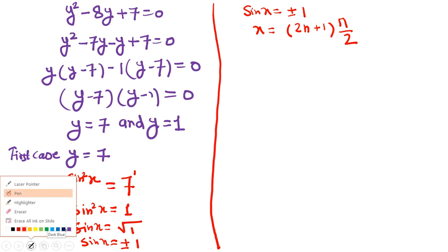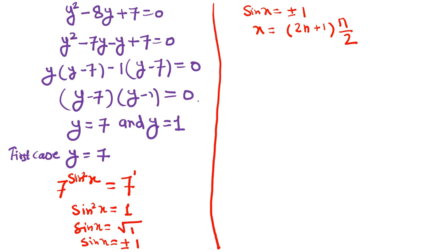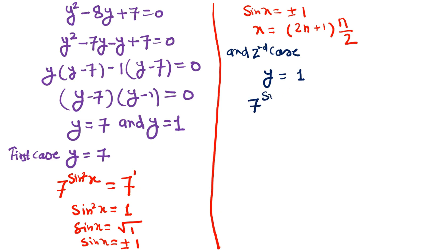Second case: when y = 1. We write 7^(sin²x) = 7⁰. This means sin²x = 0. Therefore x = nπ. This is our second solution.